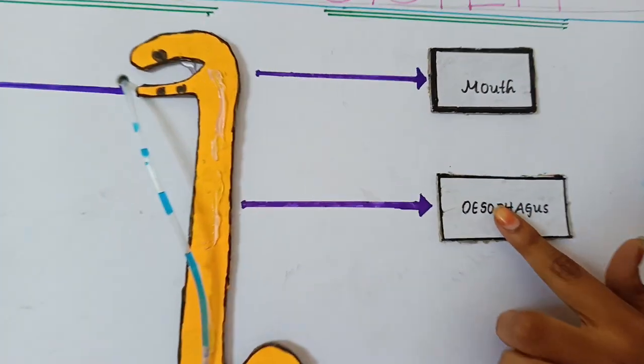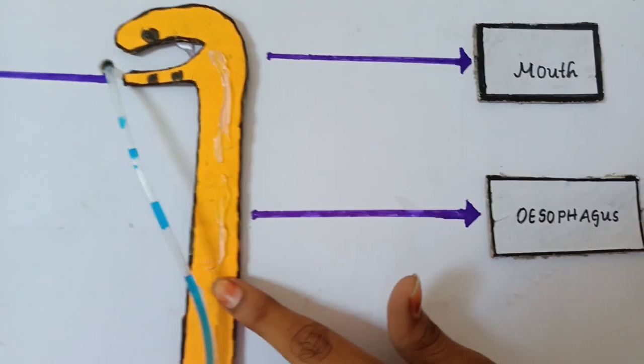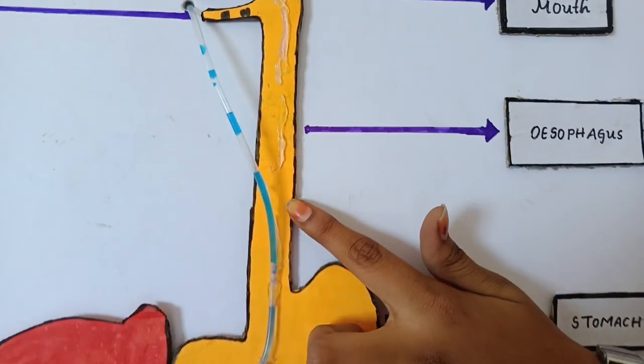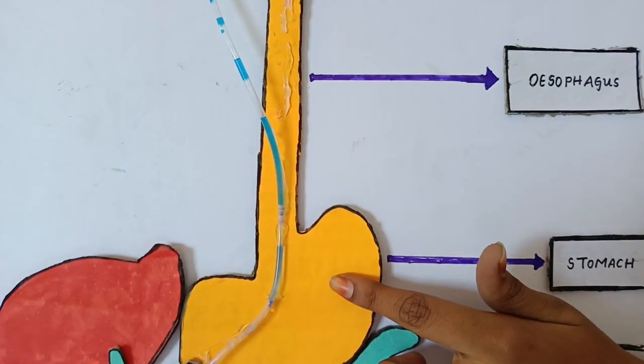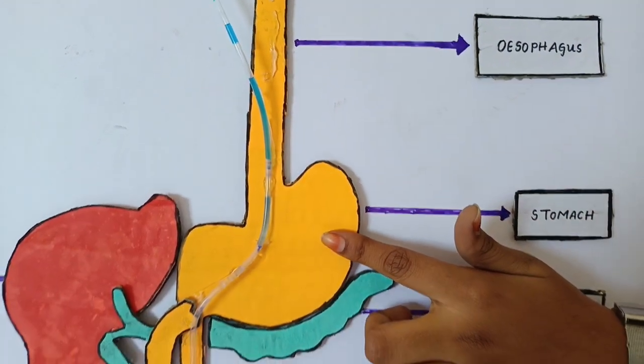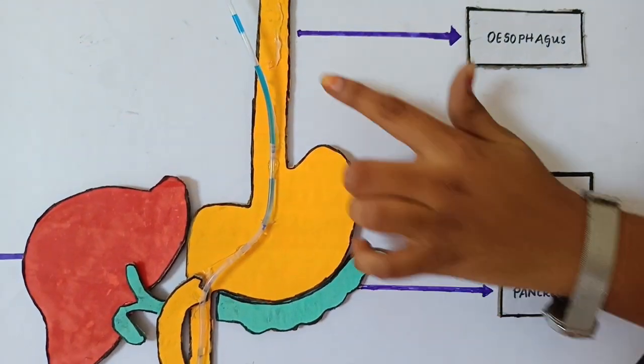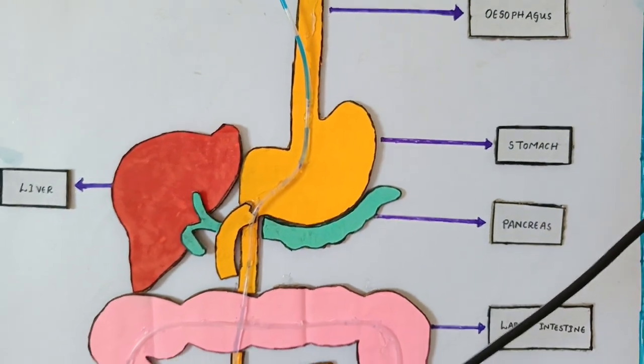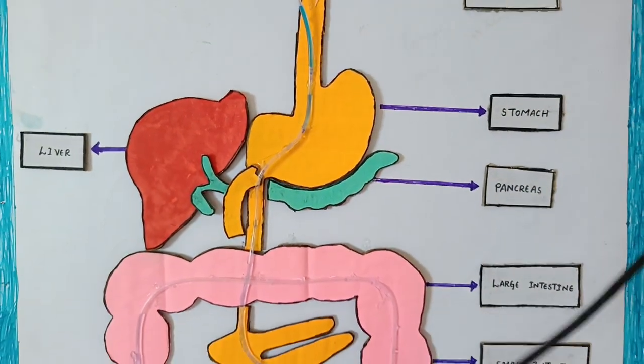The food mixed with saliva is passed through the oesophagus. The oesophagus is also called the food pipe. Through this food pipe, the food enters into the stomach with a movement. This movement is called the peristaltic wave.